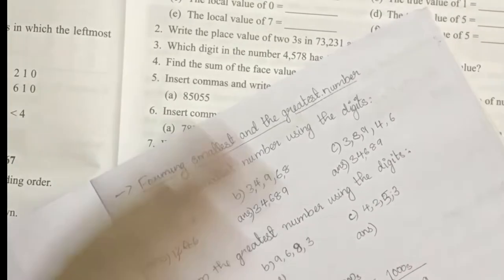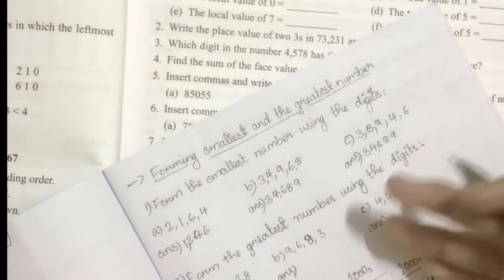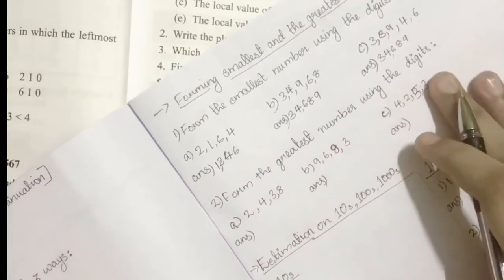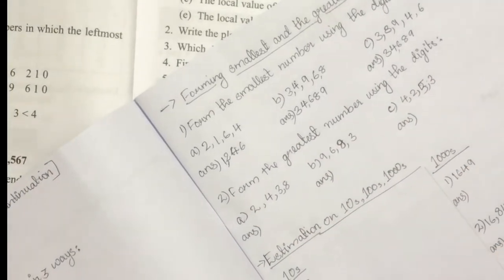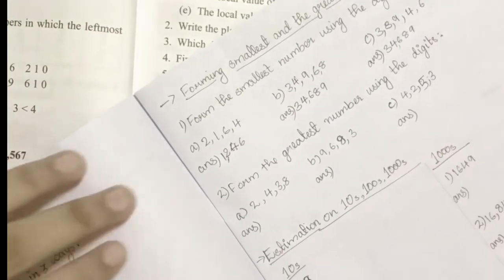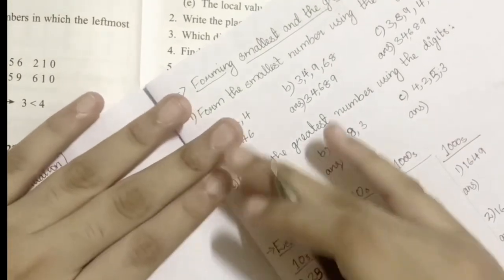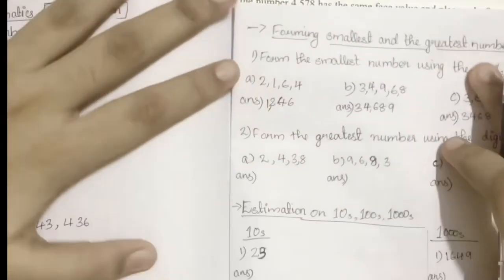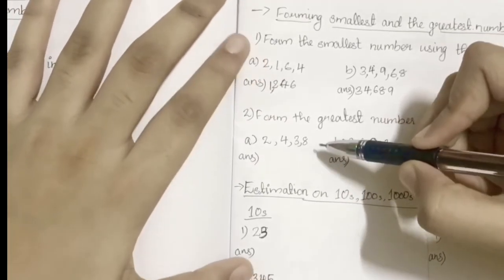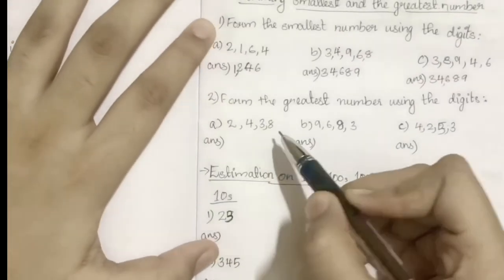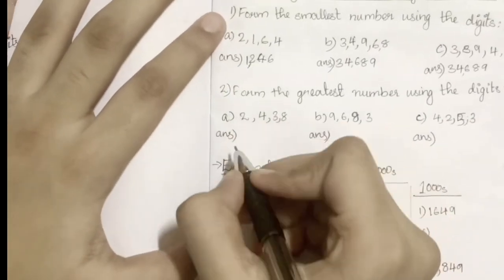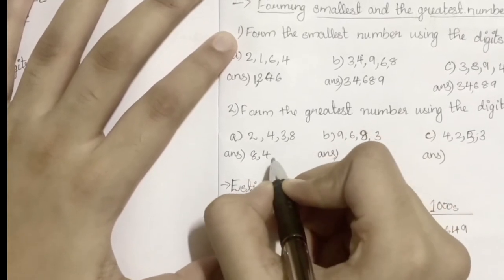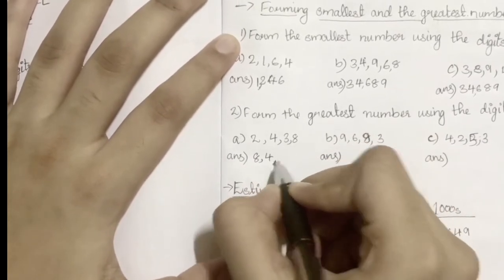The next one is form the greatest number using the digits. This time we should form the greatest number. From here we have 2, 4, 3, 8. The greatest number is formed by starting with 8, then 4, then 3, and 2, which gives 8432.